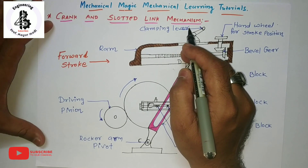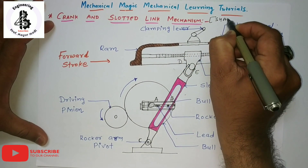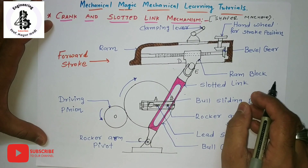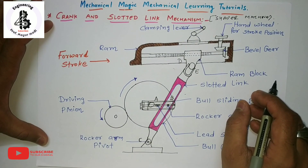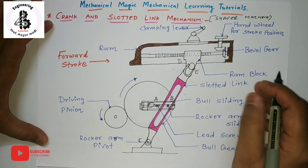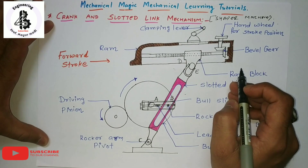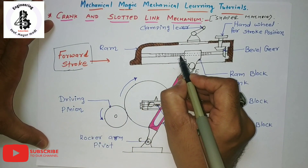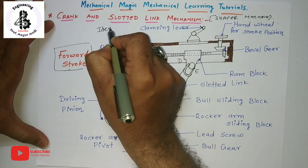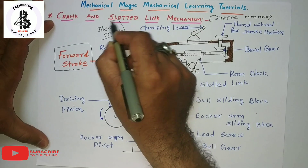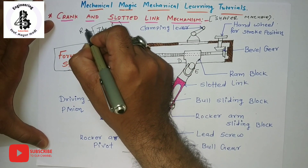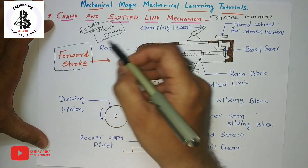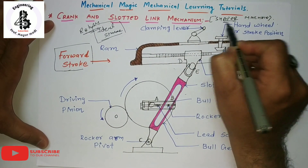Such kind of mechanism is used in the shaper machine to reduce reverse stroke time. Generally in the shaper machine, the quick return mechanism is being used. All the material removal happens only with the help of the forward stroke, so the return stroke is always an idle stroke. By reducing the time for the return stroke, we can increase the productivity in the shaper machine.